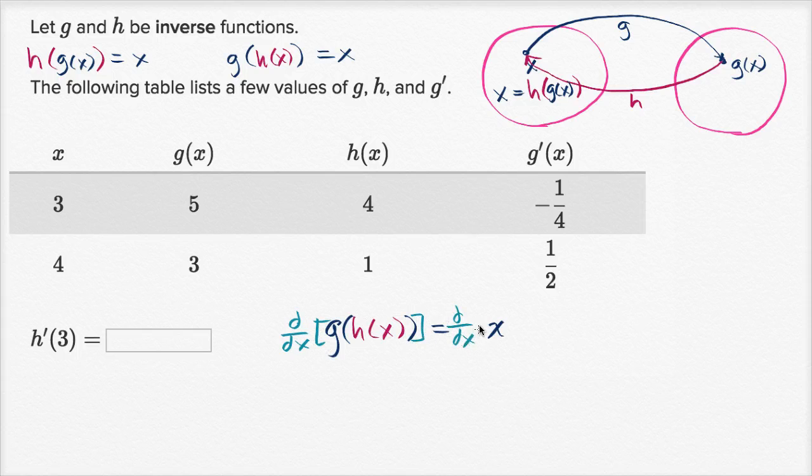On the left hand side, we just apply the chain rule. This would be g prime of h of x times h prime of x. That's just the chain rule right over there. And then that would be equal to, what's the derivative with respect to x of x? Well that's just going to be equal to one.